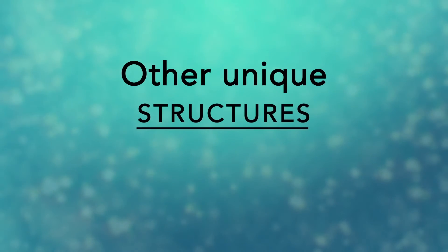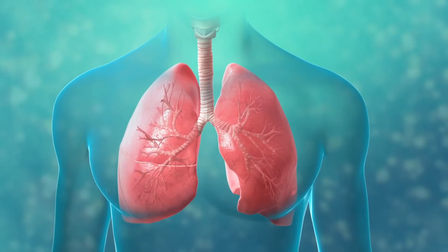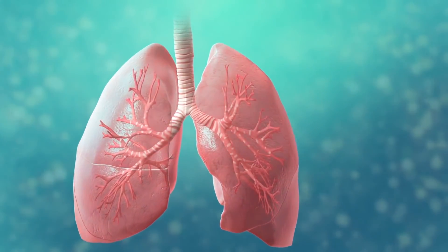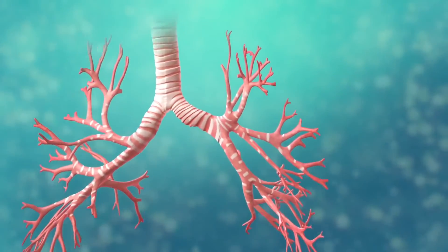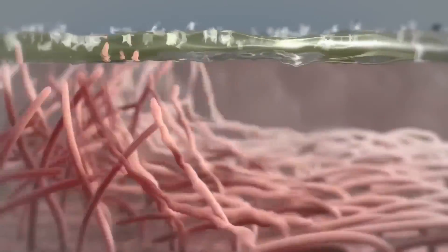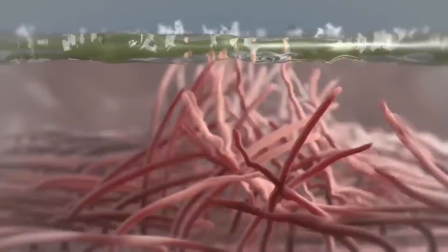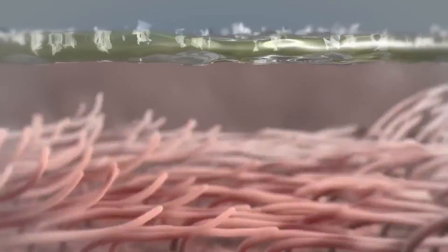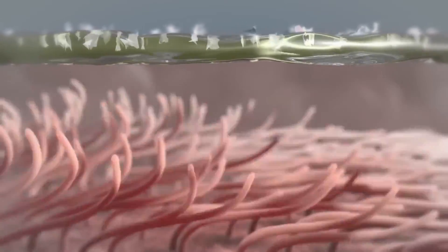There are many other unique structures that only some cells have. Here are just a few. In humans, for example, the respiratory tract is lined with cells that have cilia. These are microscopic, hair-like projections that can move in waves. This feature helps trap inhaled particles in the air and expels them when you cough.